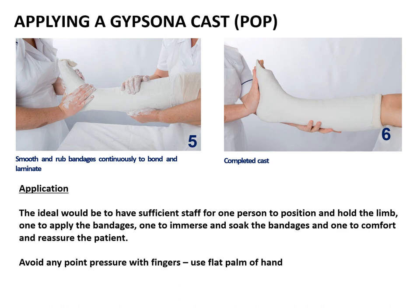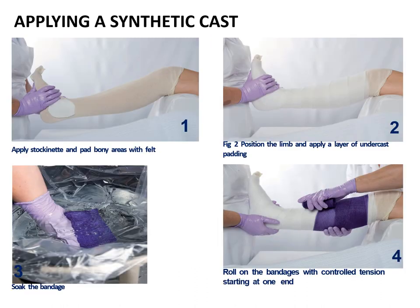Smooth and rub the bandages continuously to bond and laminate the plaster of Paris gypsona impregnated in the bandage into itself, and hold it still while it is setting. It is important to avoid any point pressure with your fingers — use only the flat palm of your hand. Remember that if you leave a slight dent with a finger, it may translate to a bigger impression internally, which will cause a pressure sore. Have assistance to hold the limb in one position so that you can concentrate on the application. For synthetic casts, similar concepts apply, but it is more important to have sufficient padding over the bony areas.